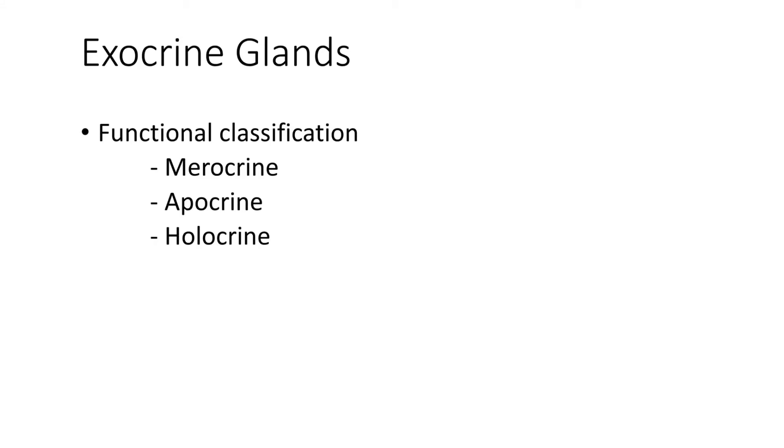The functional classification of exocrine glands tells us how the secretion happened, so how the gland released their product. And we have merocrine glands, apocrine glands, and holocrine glands. And their names make sense.